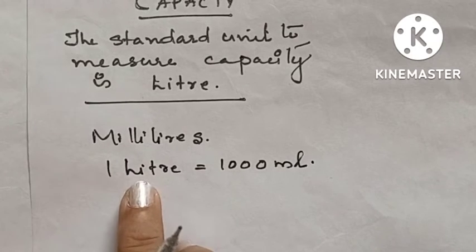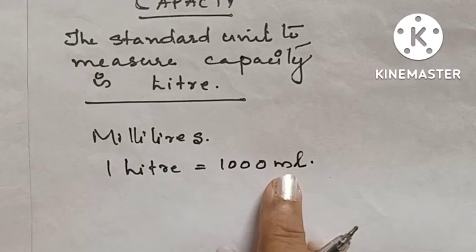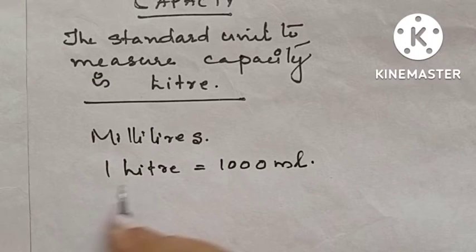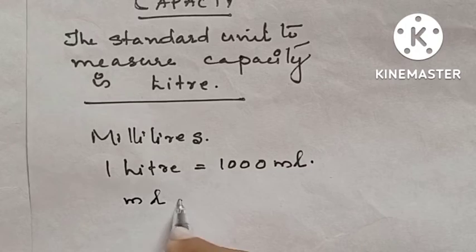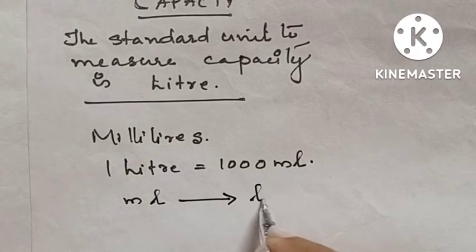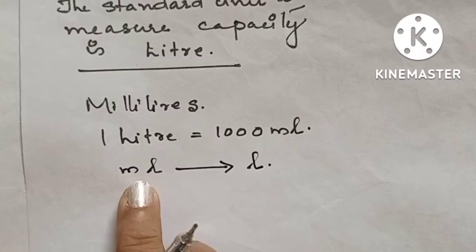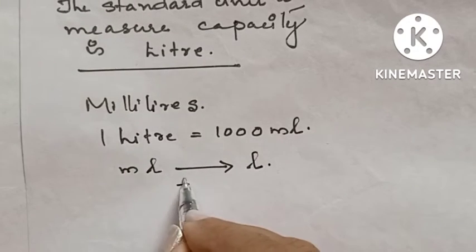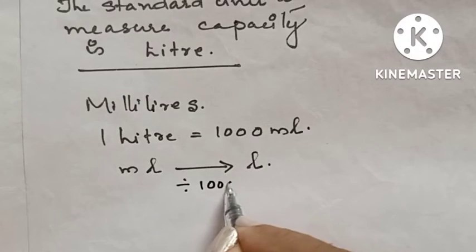Therefore, when we are converting liters to milliliters, we have to multiply by one thousand. That means the smaller unit is milliliter and the bigger unit is liter. When we are converting milliliters to liters, we have to divide by one thousand.